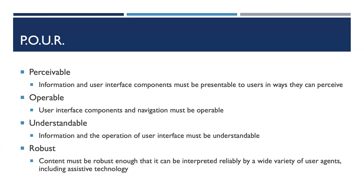POUR represents the four essential principles of digital accessibility. Perceivable focuses on making information and user interface components easily perceptible to all users regardless of their ability or disability. An example of this is providing alternate text to images or providing captions to video content.